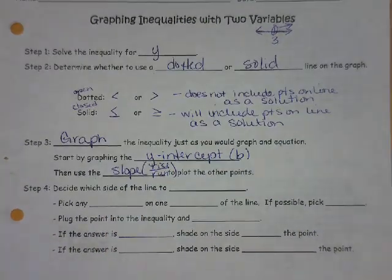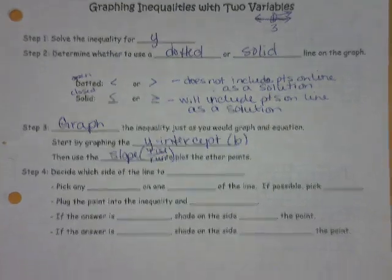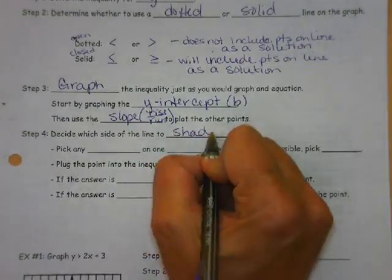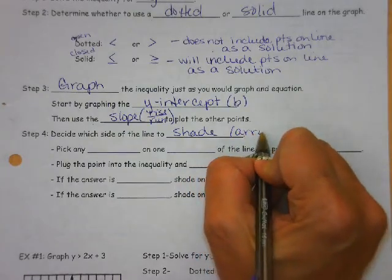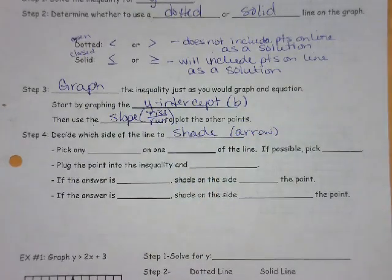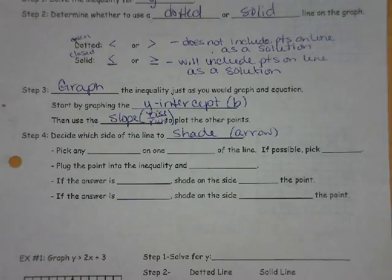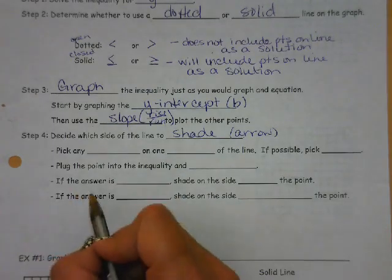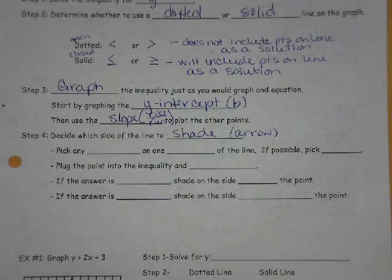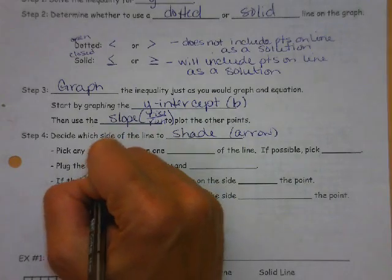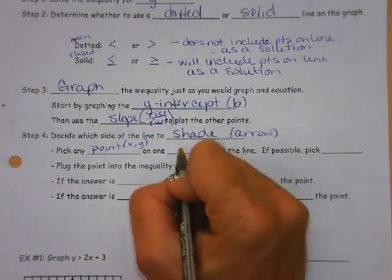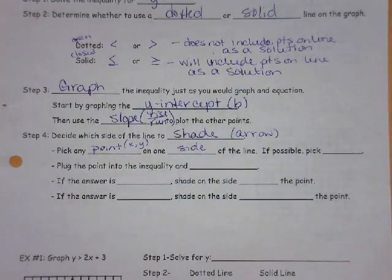Decide which side of the line to shade. This is going to be equivalent to our arrows. In order for us to decide which way to shade, there's a couple of different ways to do this, and I'm going to show you multiple ways. Pick any point, meaning an x, y coordinate, on one side of the line.